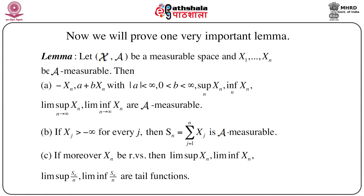If Xj > −∞ for every j, and we define Sn as the summation of Xj from j = 1 to n, then Sn is also script A measurable. Moreover, if Xn are random variables — that is, if we introduce a probability function on this measurable space — then lim sup of Xn, lim inf of Xn, lim sup of Sn/n, and lim inf of Sn/n are all tail functions.